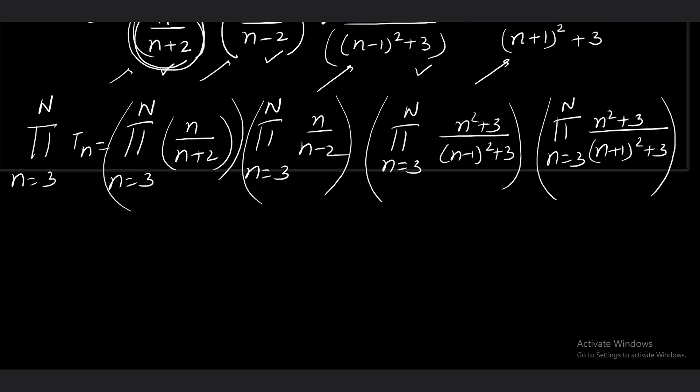Next step: write n = 3, 4, 5, 6. First product: n = 3 gives 3/5. n = 4 gives 4/6. n = 5 gives 5/7. You can see that terms have started cancelling. Since cancellation starts after 2 terms, I will write the last 2 terms: (n - 1)/(n + 1) and n/(n + 2).